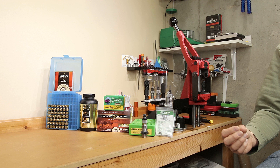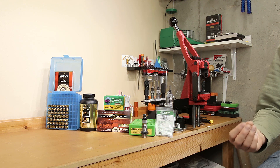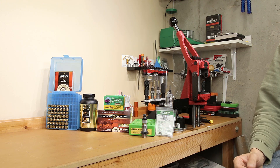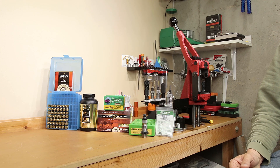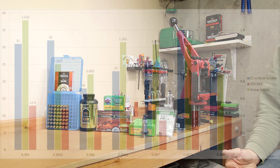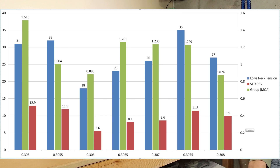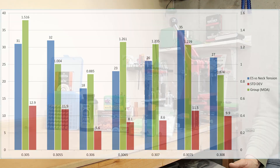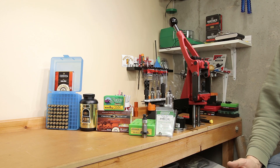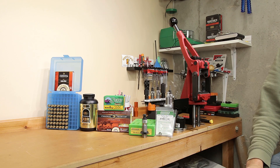Just to be clear, this load was developed using the 306 expander mandrel setting the neck tension. I do not know how much that affected today's results, but in my opinion, looking at our chart and everything all at once, our group size was the smallest and our statistics were the best with two thousandths of neck tension. This is not the only test I've run where two thousandths of neck tension seemed to perform best for me. But just because it worked best for me doesn't mean it's going to work best for you, and this is where I'm very interested in hearing from the community.